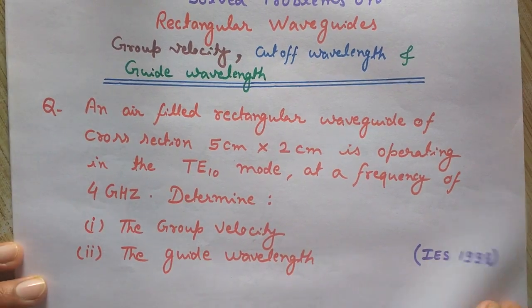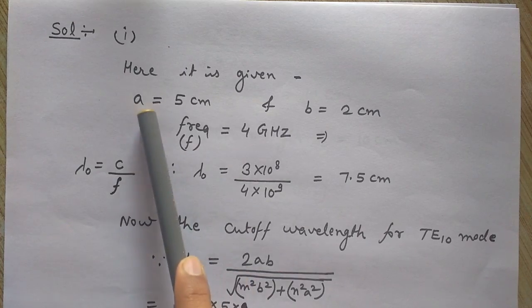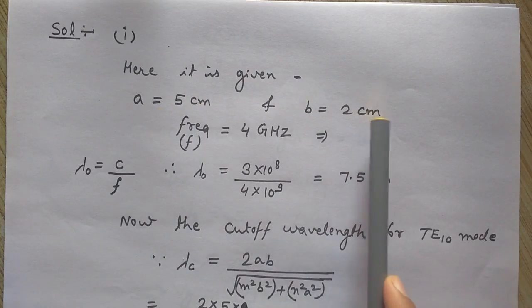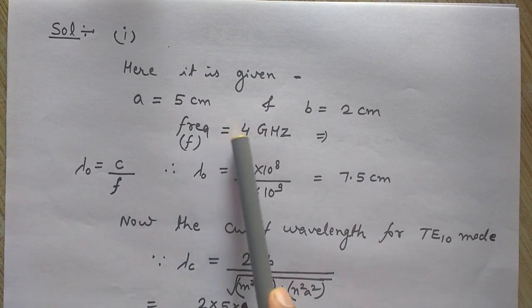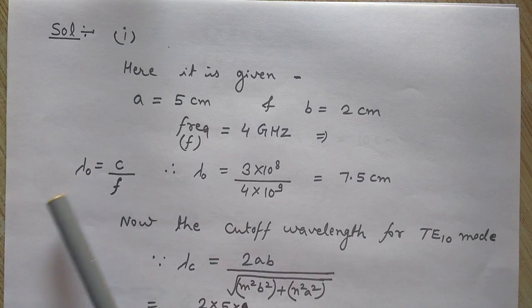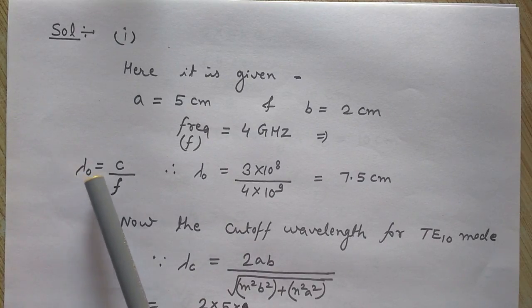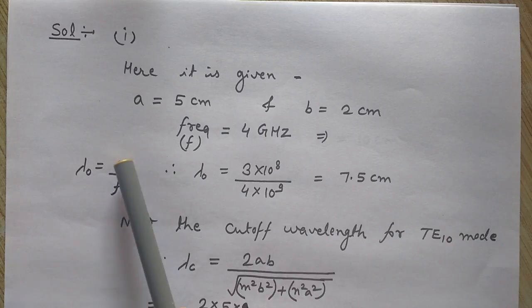So let's solve the problem. It is given here that A is 5 cm and B is 2 cm and the frequency is 4 GHz. Lambda naught, since the lambda naught that is the wavelength in free space is equal to C by F, velocity of light in vacuum divided by the frequency.